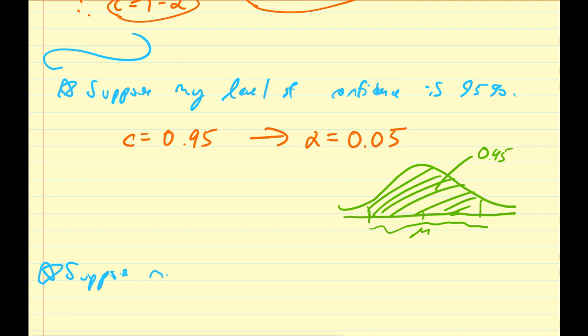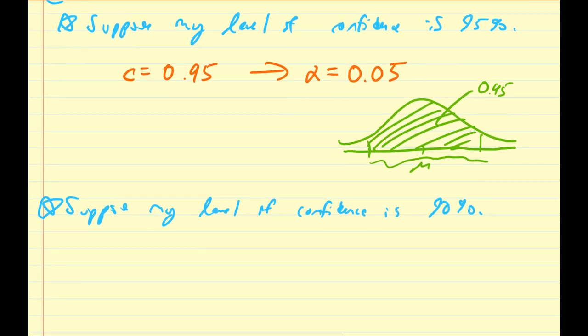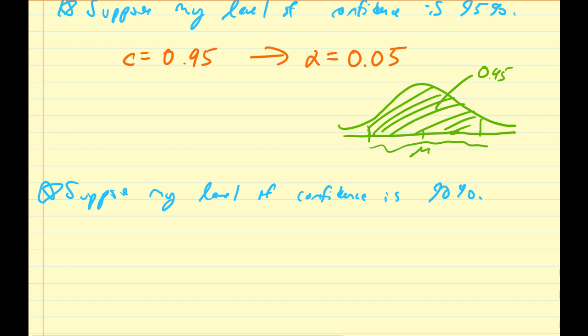So suppose my level of confidence is 90%. If that is true, then that means c is going to be equal to 0.90, forcing my statistical significance to increase to 0.10.